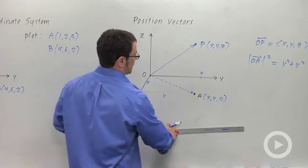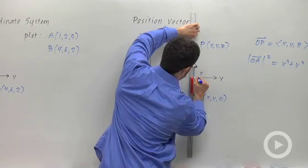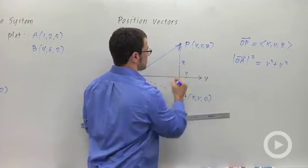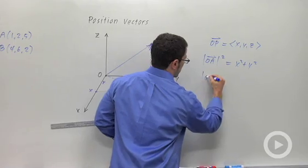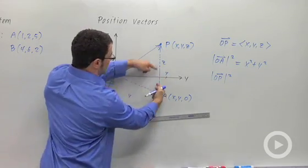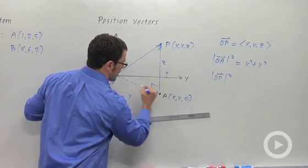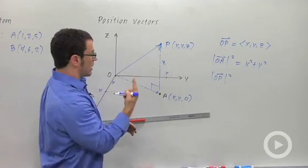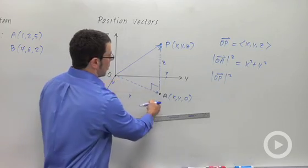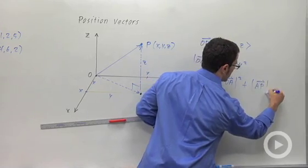Now secondly, let me take a look at vector AP. AP goes straight up from point A in the xy-plane to point P, and its length is z. So the length of OP squared, this length squared, is going to be this length squared plus this length squared, because this is a right triangle. It's hard to see when you have it drawn in perspective like this, but this is a right angle. Any vector pointing straight up is going to be perpendicular to any vector lying flat in the xy-plane.